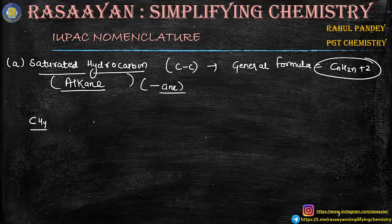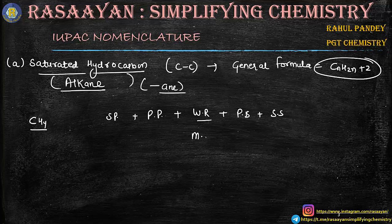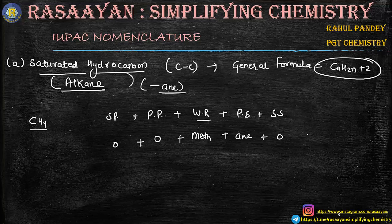So we are taking the cases one by one. First of all, let's talk about methane. There is one carbon atom. Is there a word root? Yes — it's one carbon atom, so we will use 'meth'. Is there a primary suffix? Yes, it will be 'ane'. Is there any secondary suffix or functional group? No, so that is zero. Is there any cyclic chain? No, nothing. Is there any substituent? No, again zero. So the only name we come up with for this molecule is meth plus ane — if you write them together, we obtain methane.